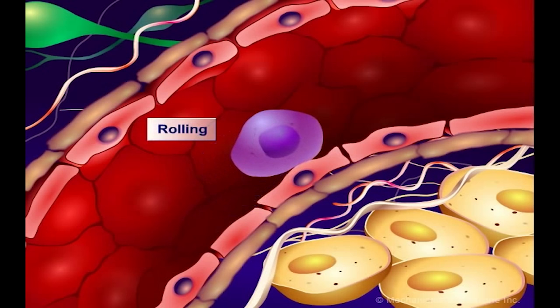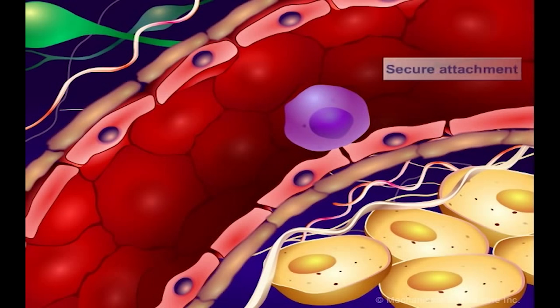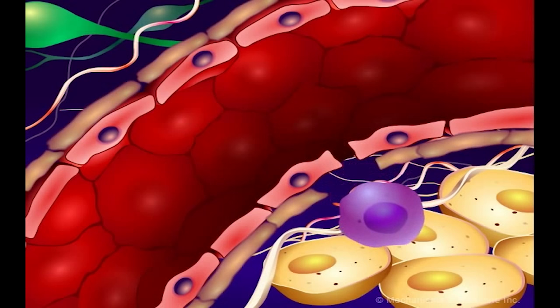The idea would be that if we put these particles into the lungs before cancer has started to spread or when cancer is still trying to establish itself in the lungs, we can provide the immune system with an advantage to reject the cancer.